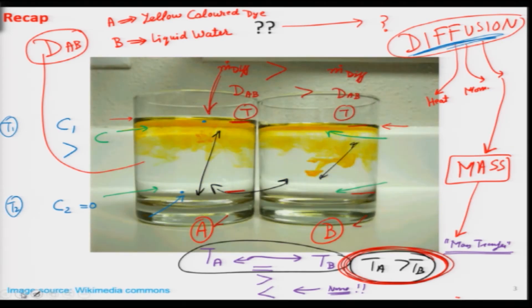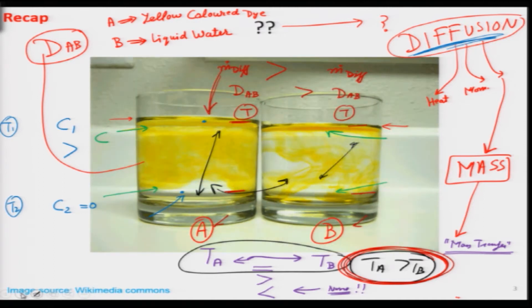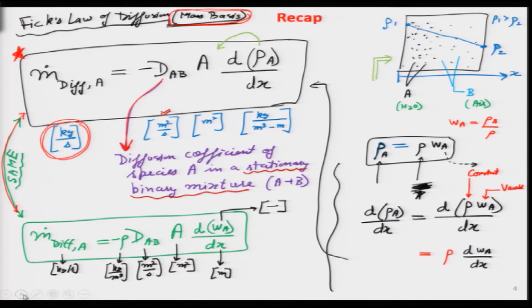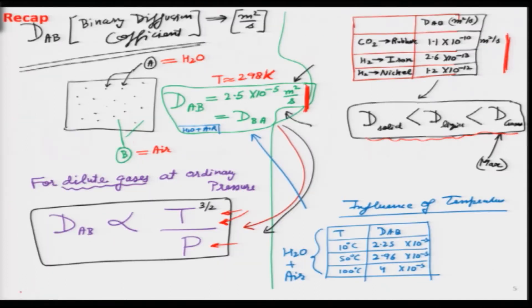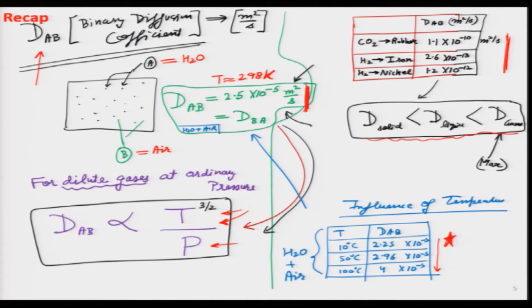This is an image animation showing diffusion taking place of a color dye in a liquid medium. Earlier we had looked at Fick's law of diffusion, given by an equation we examined on both a mass and molar basis. One important parameter in that equation is the proportionality constant D_AB, the binary diffusion coefficient of species A in medium B. We also looked at the temperature dependence of D_AB — as temperature increases, D_AB also increases.